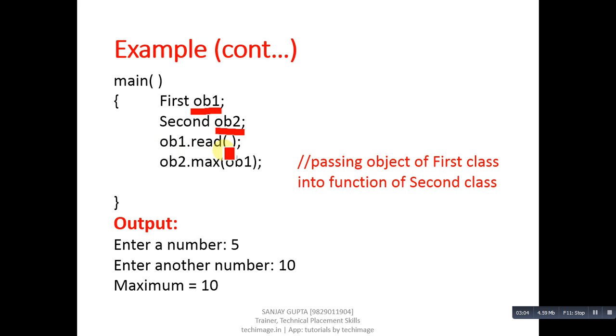Then ob2.max is called and we have passed ob1 as an argument inside max function. Max function is defined in Second class but it is receiving the argument of First class. This can be possible with the help of friend classes. You can also see the output: two numbers we have to enter 5 and 10 and result is maximum equals to 10.